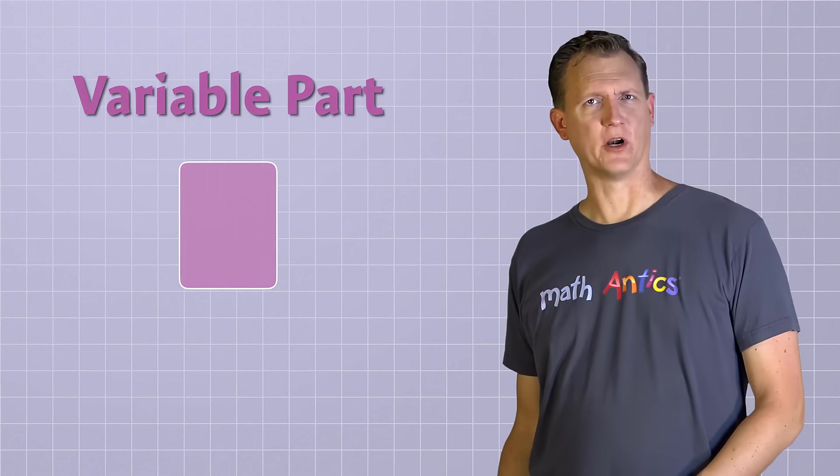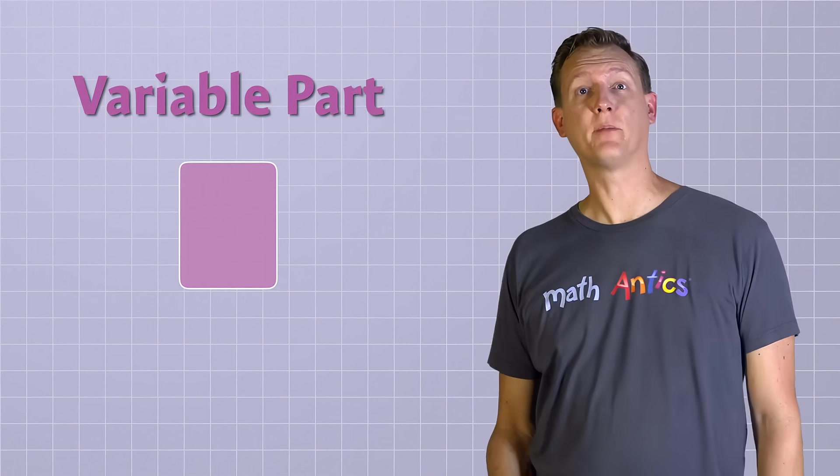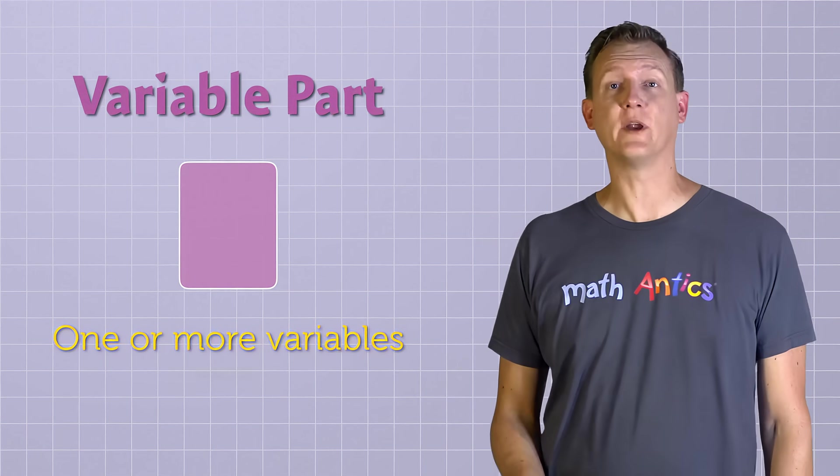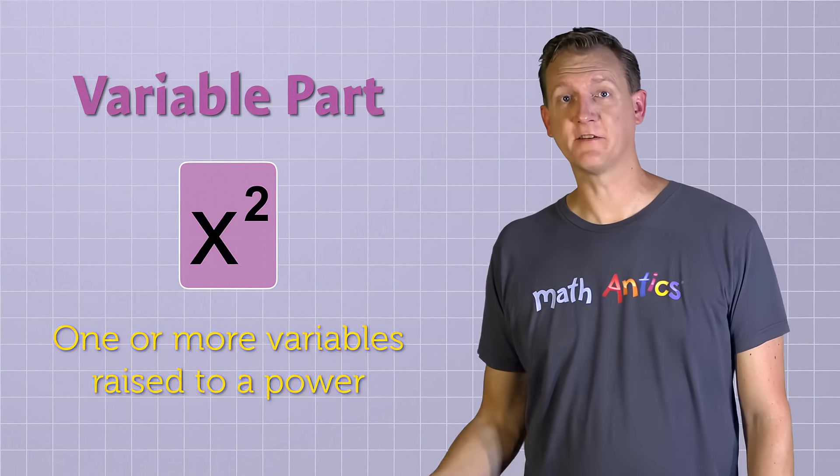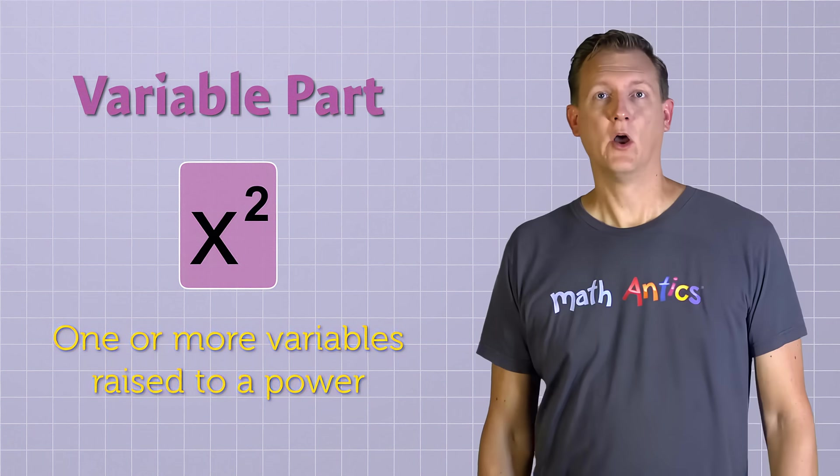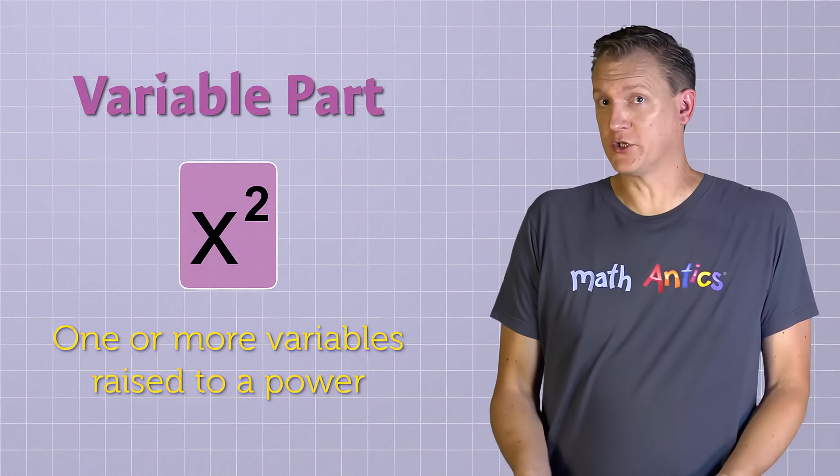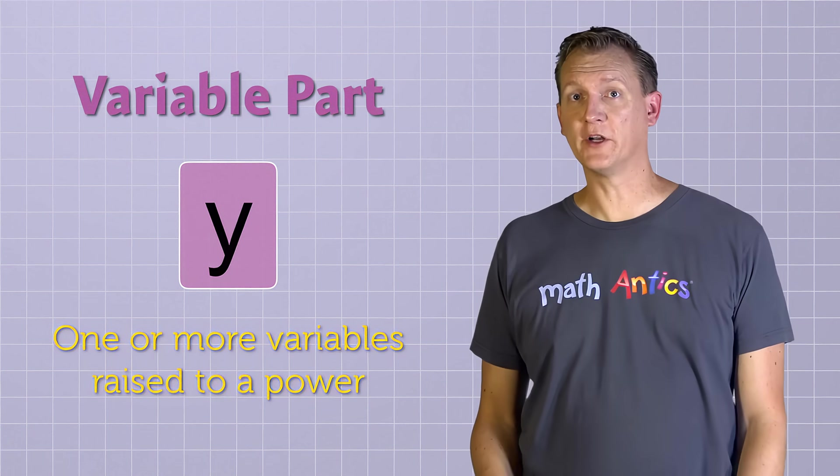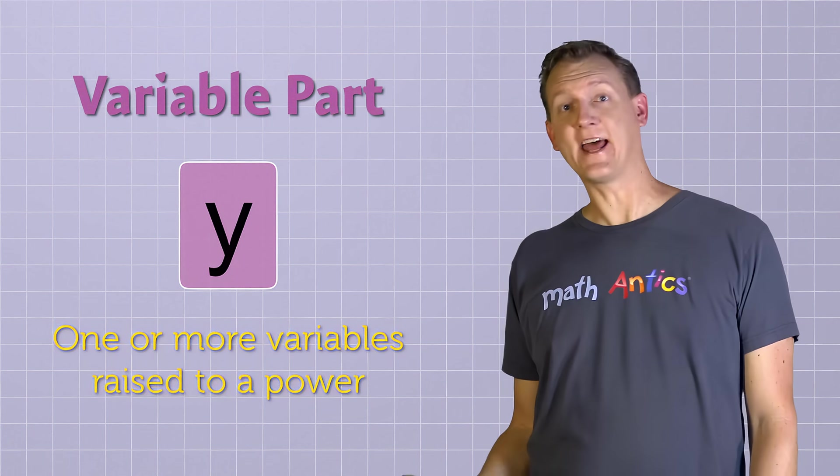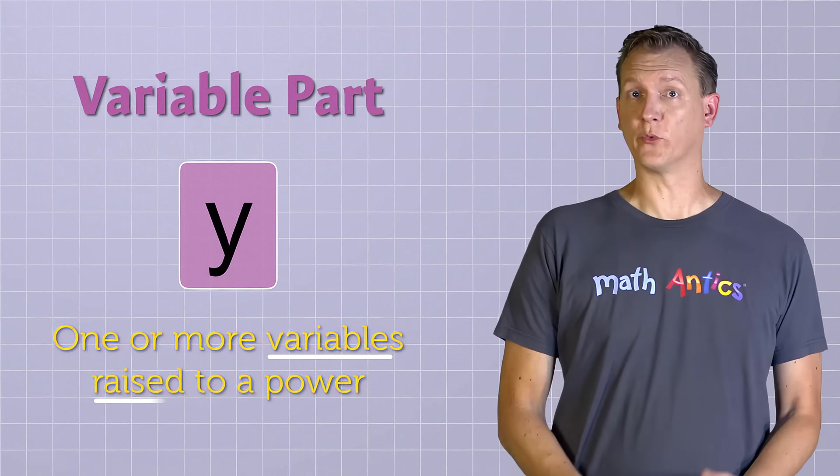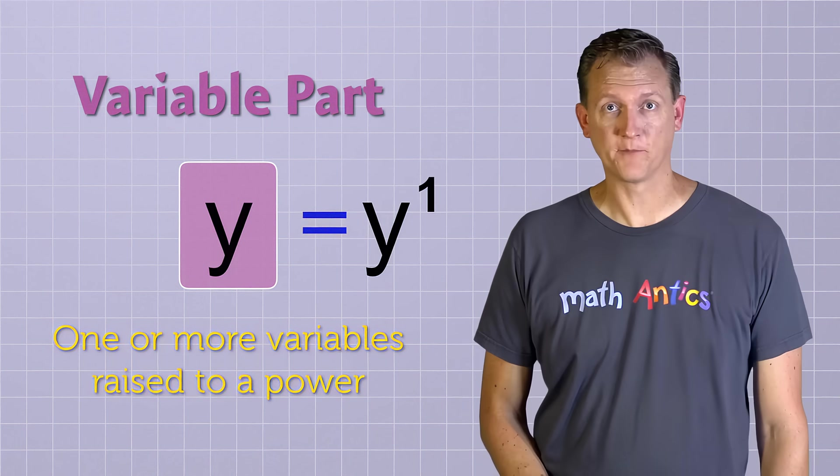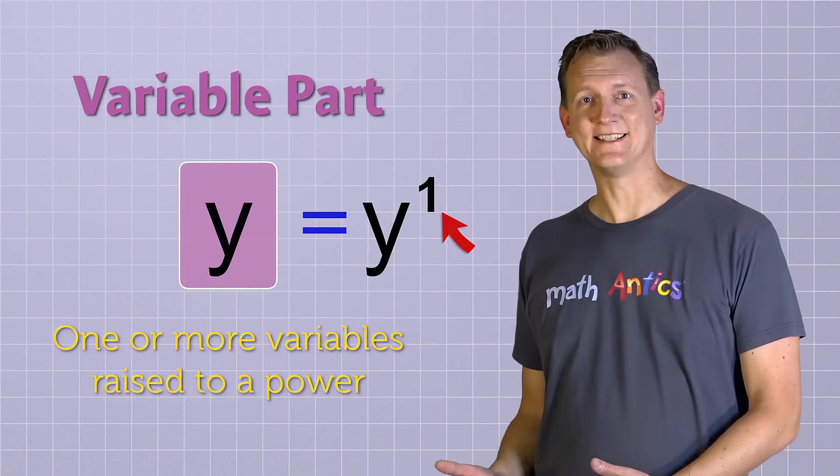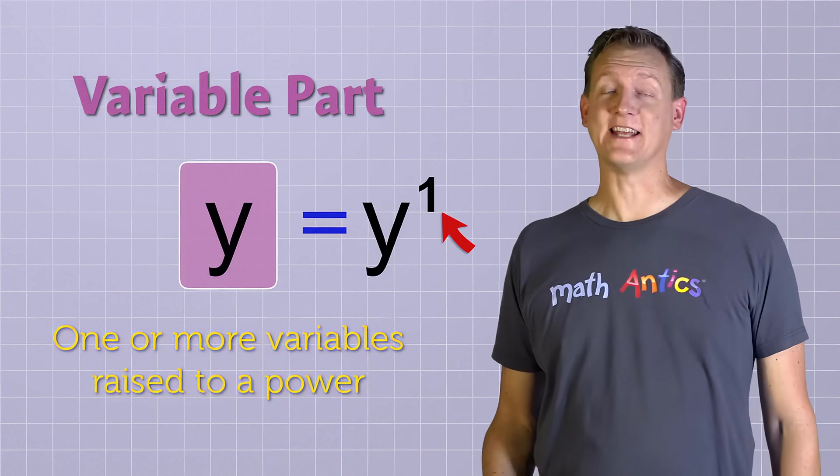The variable part of a term is a little more complicated. It can be made up of one or more variables that are raised to a power. Like the variable part could be x squared. That's a variable raised to a power. Or the variable part could be just y. If you remember what we learned in our last video, you'll realize that that also qualifies as a variable raised to a power. y is the same as y to the first power. But since the exponent 1 doesn't change anything, we don't need to actually show it.